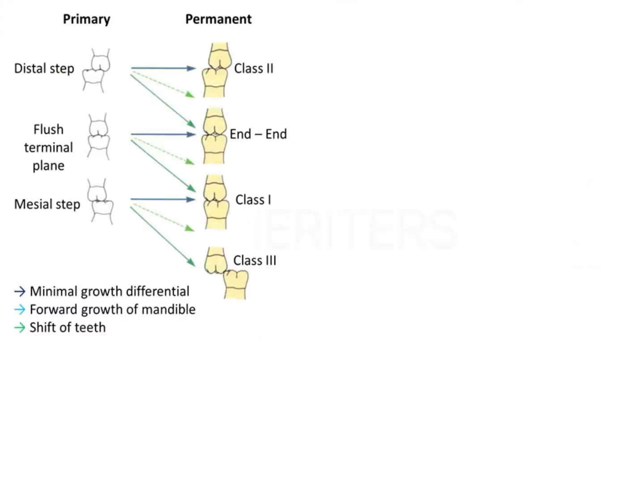As growth takes place, two things happen: growth of the jaws and shifting of the teeth — there is mesial movement of teeth within the arch. A relationship can be predicted based on the primary molar relationship, giving an approximate idea of what the occlusion will look like in the permanent dentition.